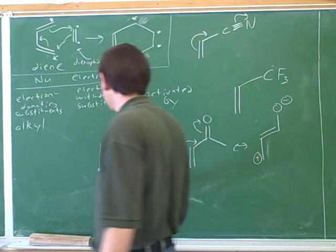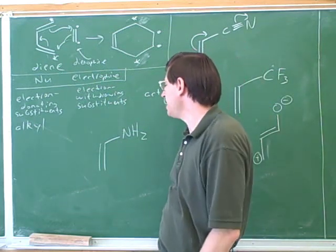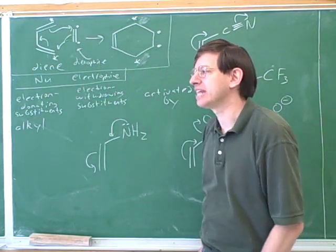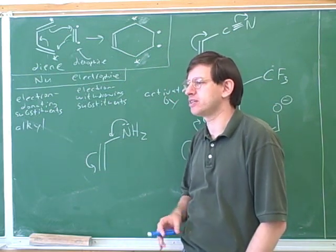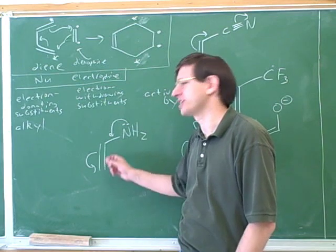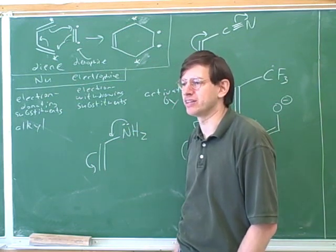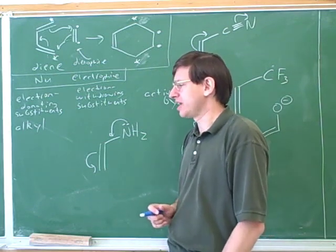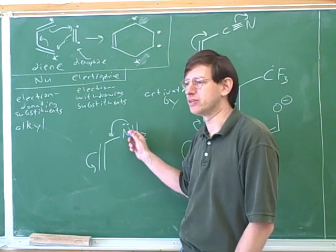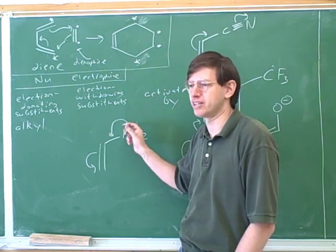But wouldn't NH2 be electron-donating, because its pi bonds can go towards the double bond? That's right — this is tricky. By induction, NH2 is electron-withdrawing because nitrogen is electronegative, but by resonance it's electron-donating. Generally speaking, if there's a tug of war between induction and resonance, resonance is usually stronger. So NH2 would mainly be electron-donating. It's important that NH2 groups are electron-donating through resonance, which is very crucial when you get to benzene — the next chapter.